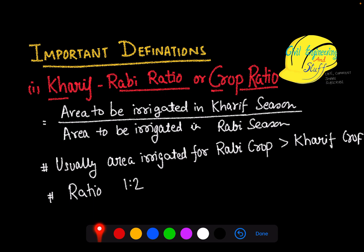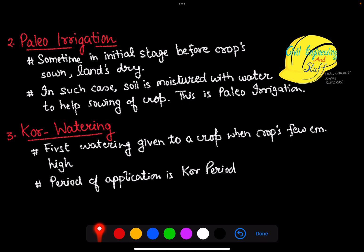The first important definition is the Kharif-Rabi ratio, commonly referred to as the crop ratio. In irrigation engineering, the crop ratio is defined as the area to be irrigated in the Kharif season divided by the area to be irrigated in the Rabi season. Usually the area irrigated for Rabi crop is greater than Kharif crop, so the ratio generally lies as 1:2, meaning the Rabi season has a higher irrigation area.